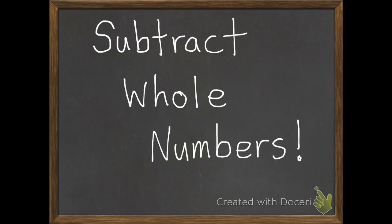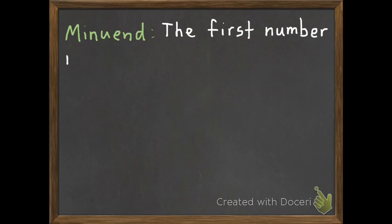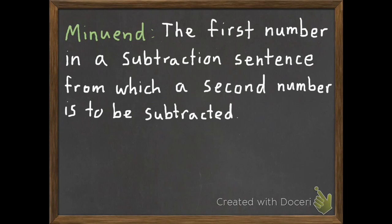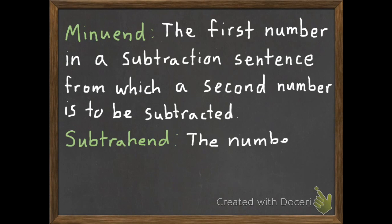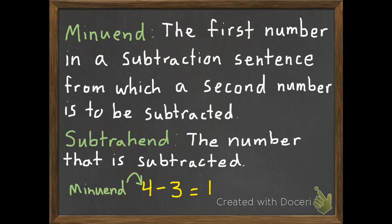For this lesson we are going to subtract whole numbers. Some vocabulary first: minuend is the first number in a subtraction sentence from which a second number is to be subtracted. Our second vocabulary word is subtrahend — it is the number that is subtracted. So if we have 4 subtract 3 equals 1, the 4 is the minuend and the 3 is the subtrahend.